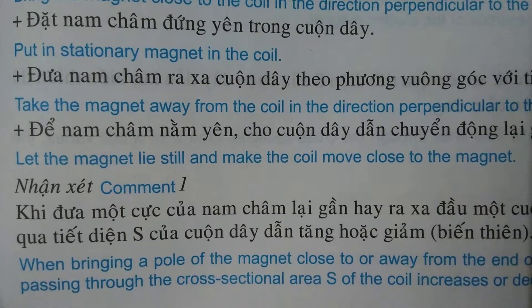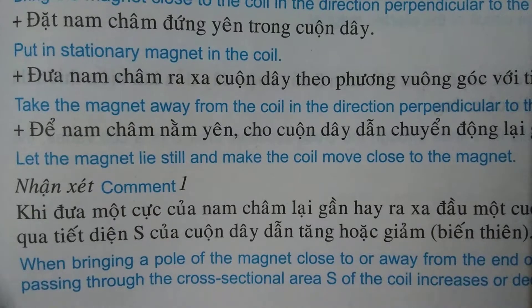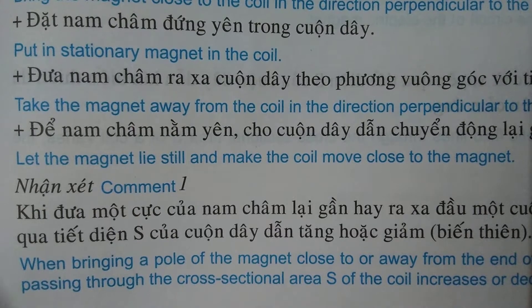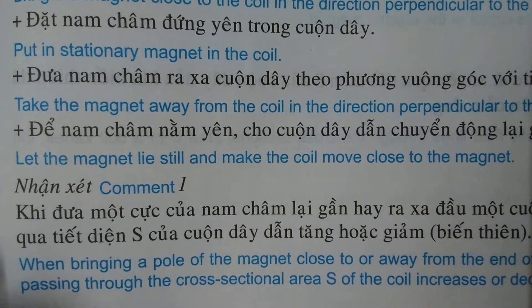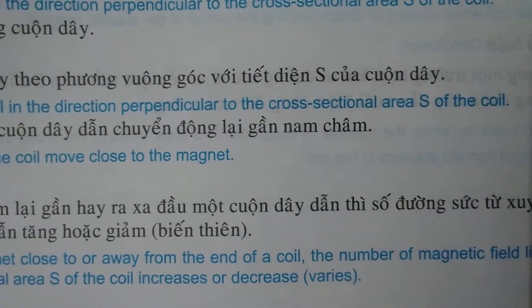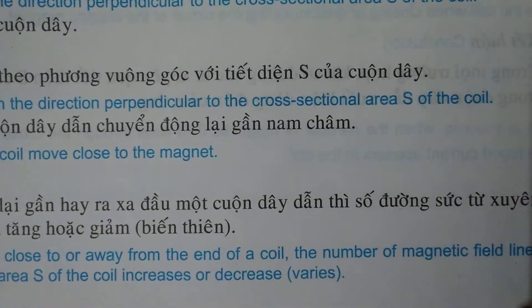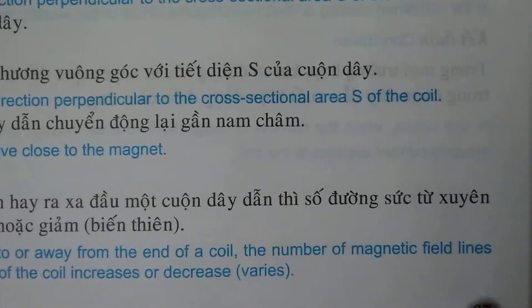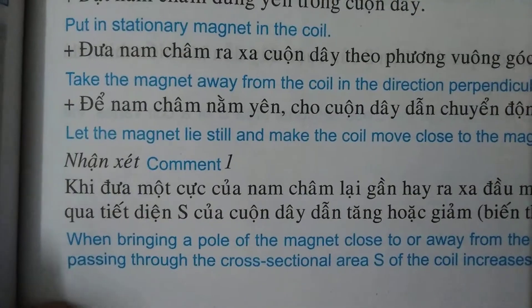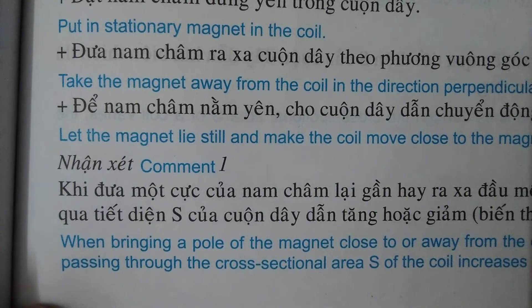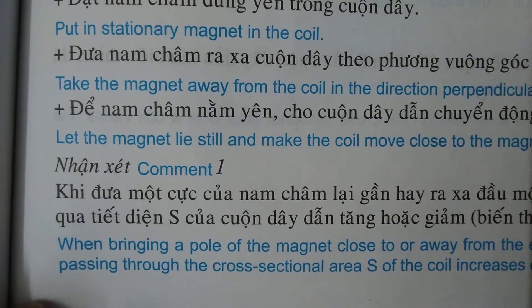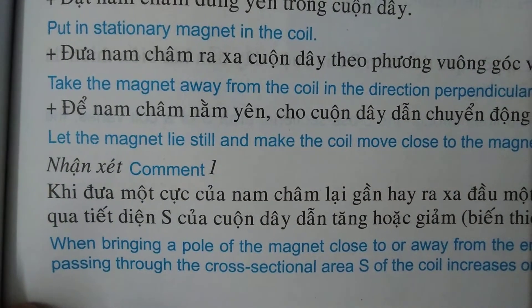Comment: When bringing a pole of the magnet close to or away from the end of the coil, the magnetic field lines through the cross-sectional area of the coil change.